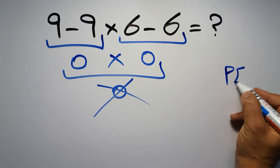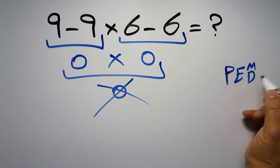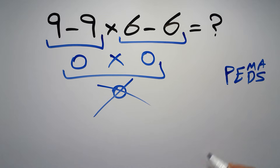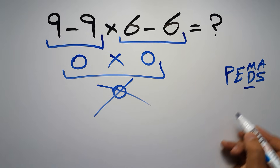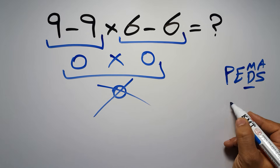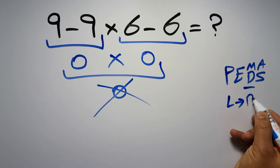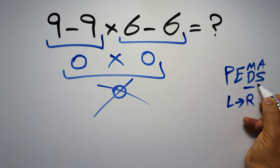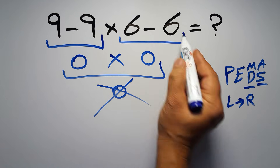According to the order of operations, first we do parentheses, then exponents, then multiplication or division, and finally addition or subtraction. Remember that multiplication and division have equal priority and we go from left to right, and the same applies to addition and subtraction.